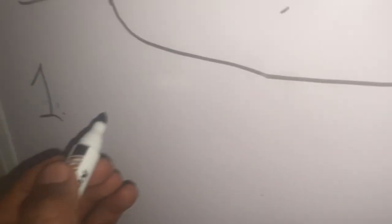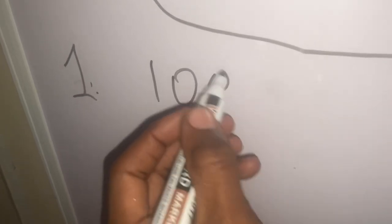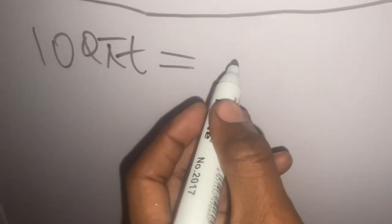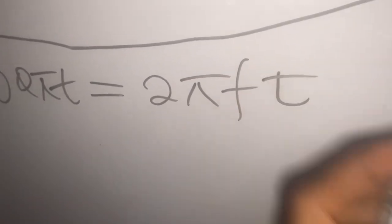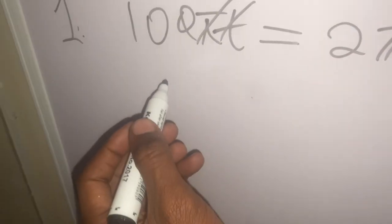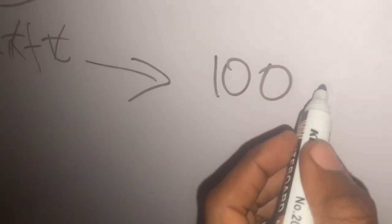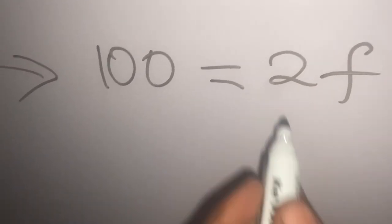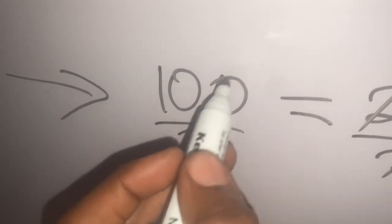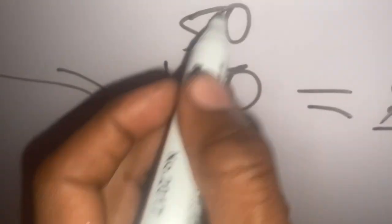To solve question 1, the frequency: 100πt equals 2πft. The π and t cancel on both sides, leaving 100 equals 2F. Dividing both sides by 2 gives F equals 50. Therefore, our frequency F is equal to 50 hertz.